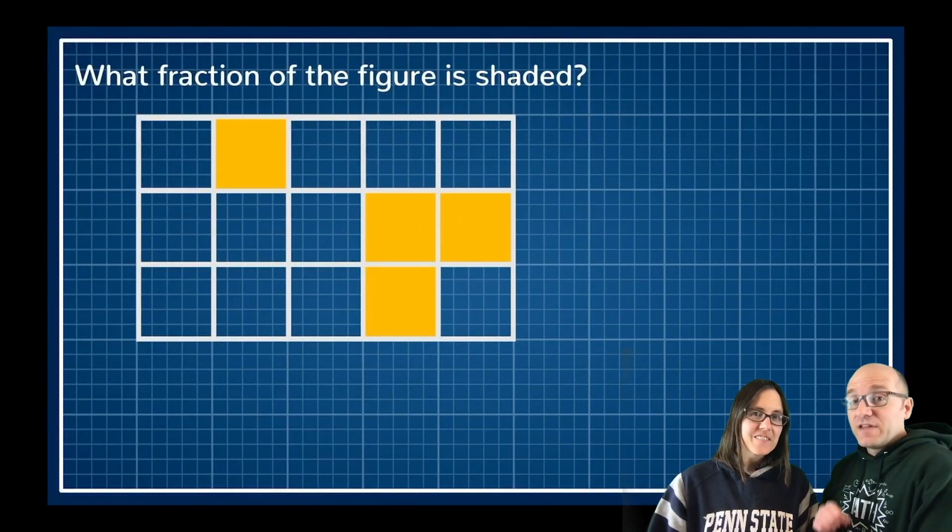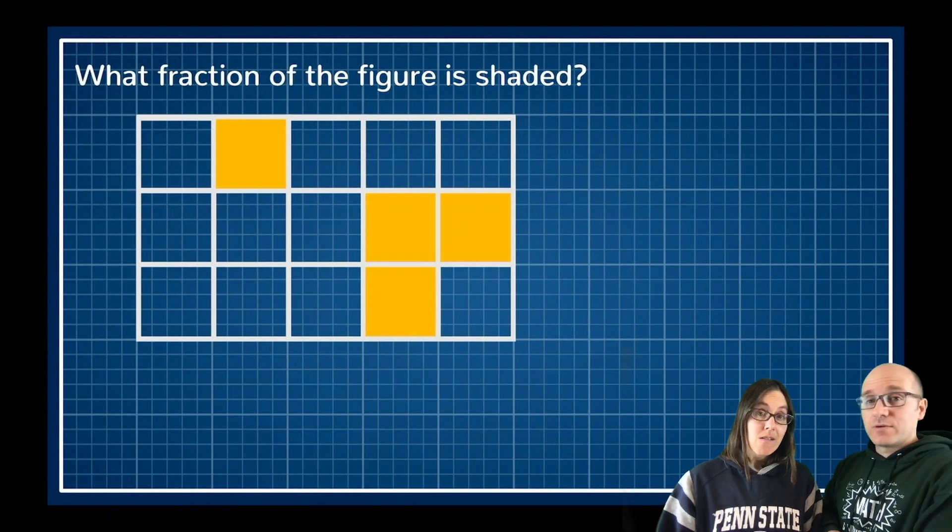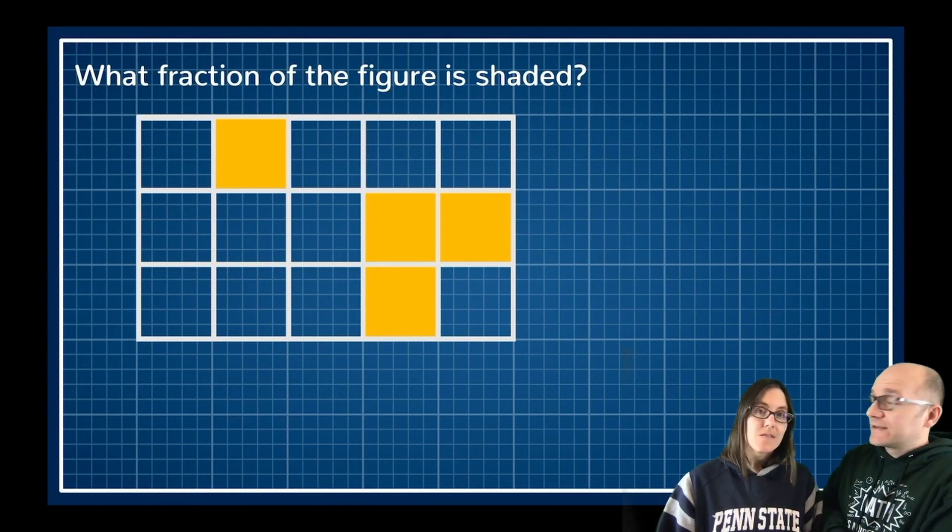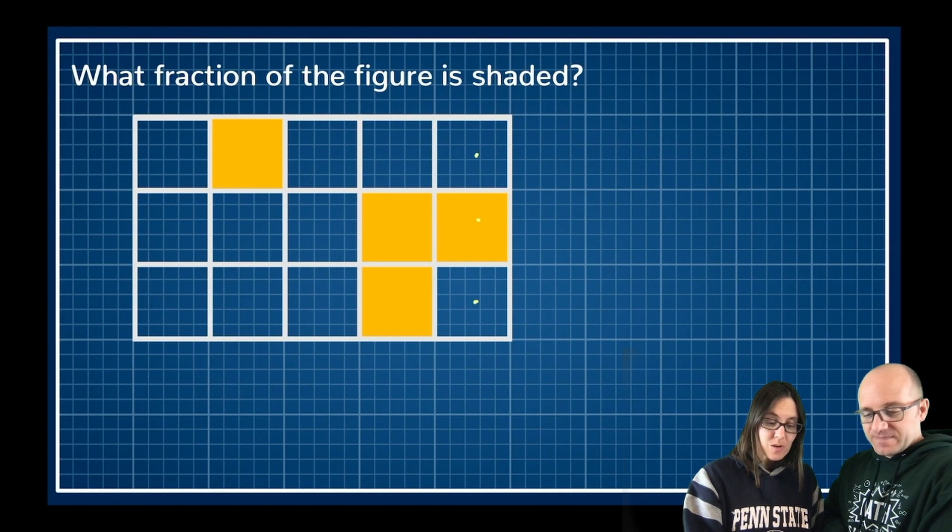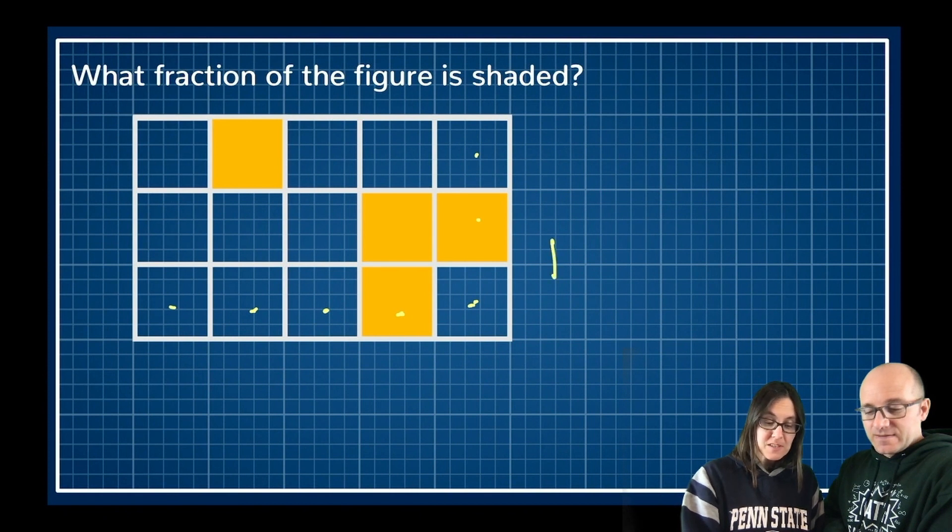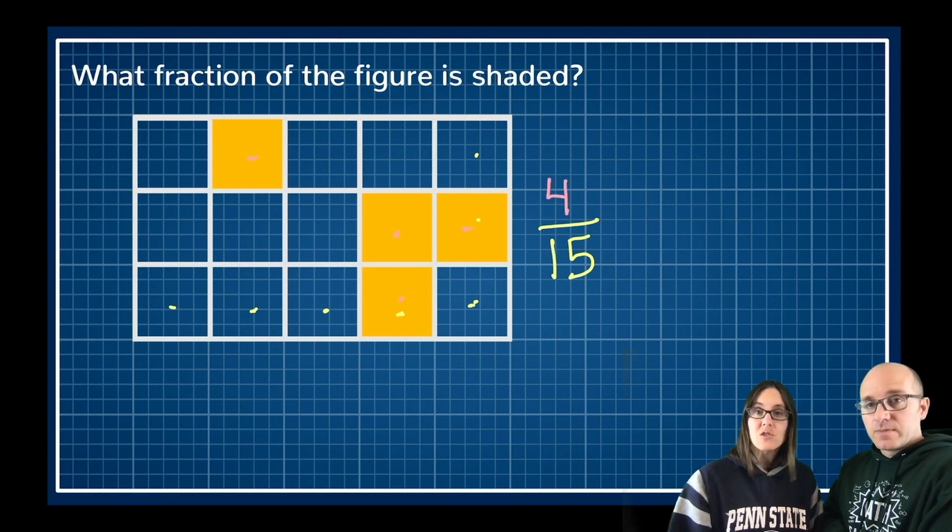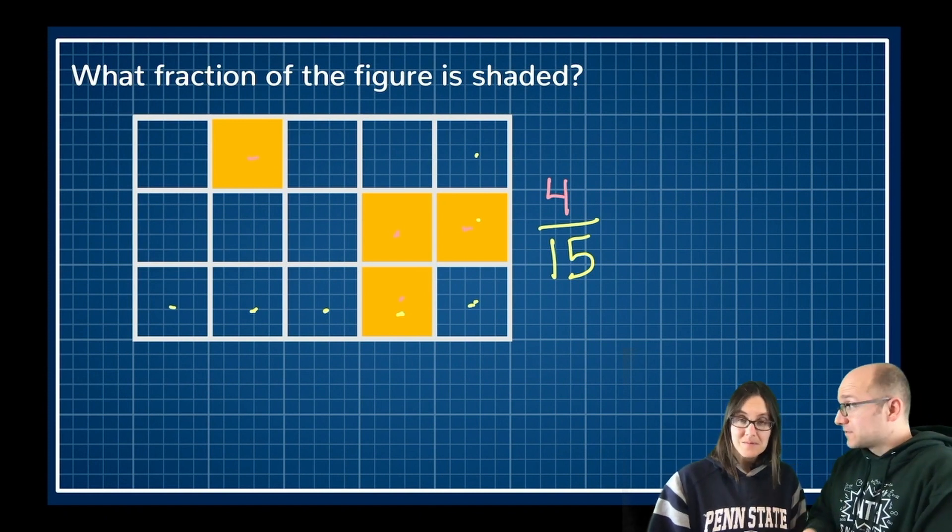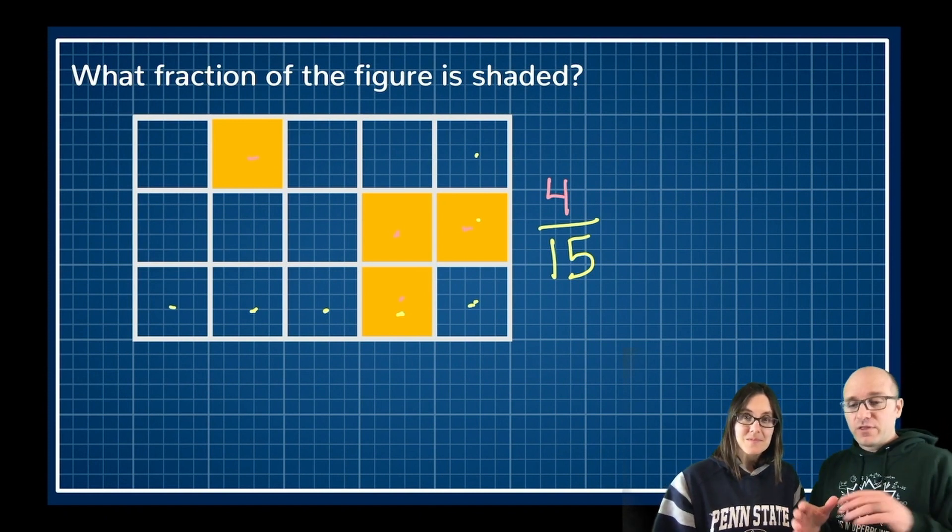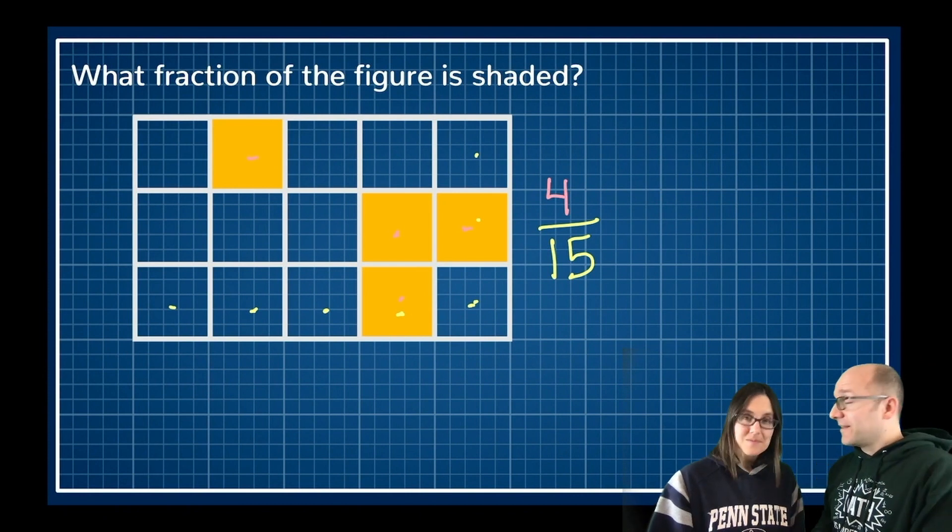What fraction of this figure is shaded? Got a rectangle with some squares inside it. So we just need to count up the boxes. I've got one, two, three, and then one, two, three, four, five. And I know that five times three is 15. So there are 15 total boxes. And then one, two, three, four - four of those boxes are shaded. So four fifteenths. Well, four out of 15 are shaded, so four fifteenths of the whole figure is shaded.